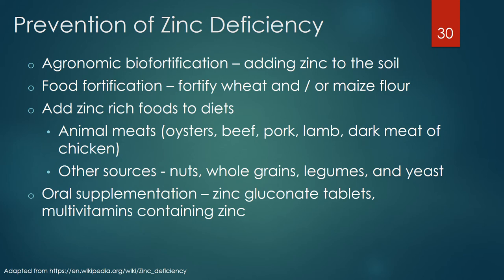Strategies to prevent zinc deficiency globally include adding zinc to soil — called agronomic biofortification — which both increases crop yields and provides more dietary zinc. Food fortification with zinc is practiced in China, India, Mexico, and about 20 other countries. Although whole grains and cereals are high in zinc, they also contain chelating phytates which bind zinc and reduce its bioavailability. The foods with the highest concentrations of zinc are animal proteins, especially oysters; beef, pork, and lamb contain more zinc than fish, and dark meat of chicken has more zinc than light meat. Other good sources include nuts, whole grains, legumes, and yeast.